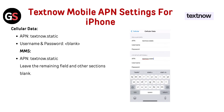TextNow mobile APN settings for iPhone. Cellular Data APN: TextNow.Static. Username and password: leave blank. MMS APN: TextNow.Static. Leave the remaining fields and other sections blank.